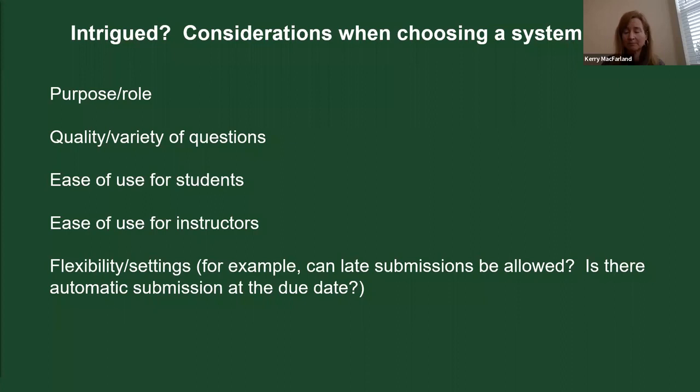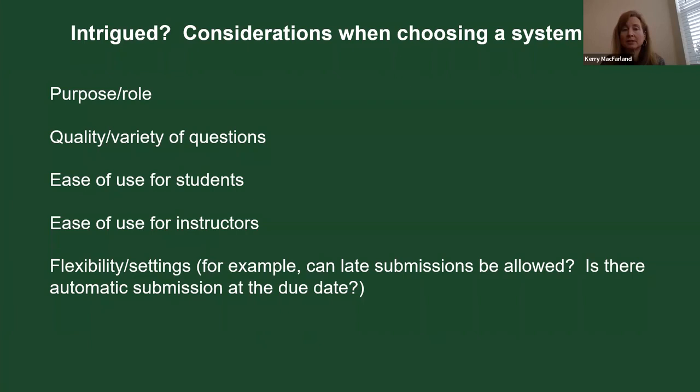When considering which system to choose, we've mostly addressed the key factors already: different roles for different systems, some having better questions than others, some being more engaging for students. For example, the Chem 101 app is actually a fun way for students to practice chemistry, while other systems can be a little more tedious. Ease of use for instructors, flexibility of settings, and pricing are also important considerations.